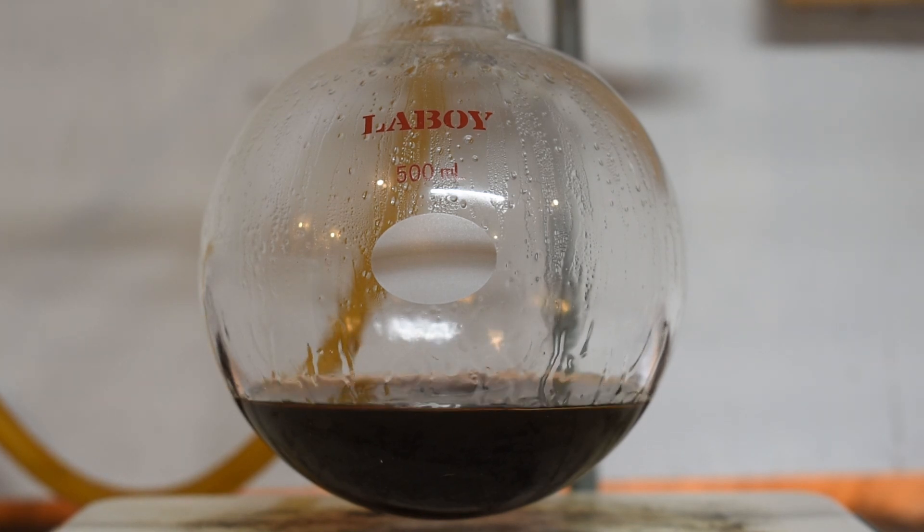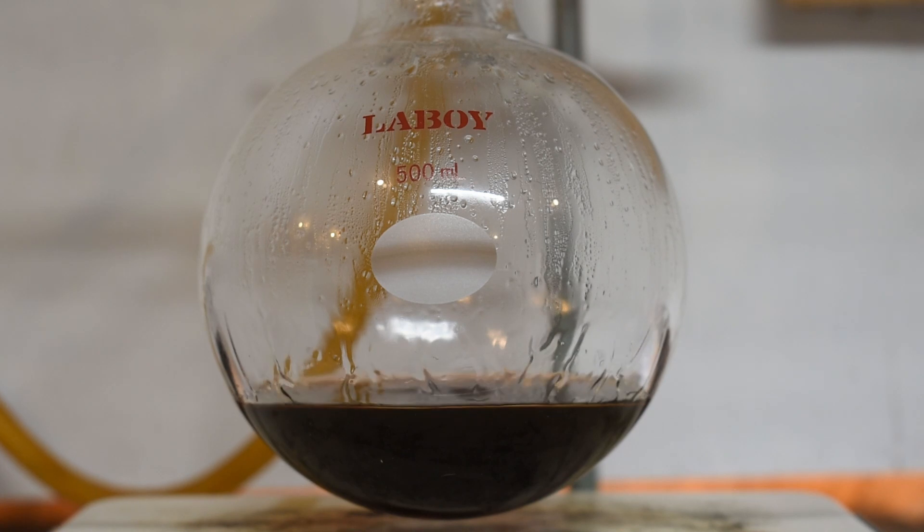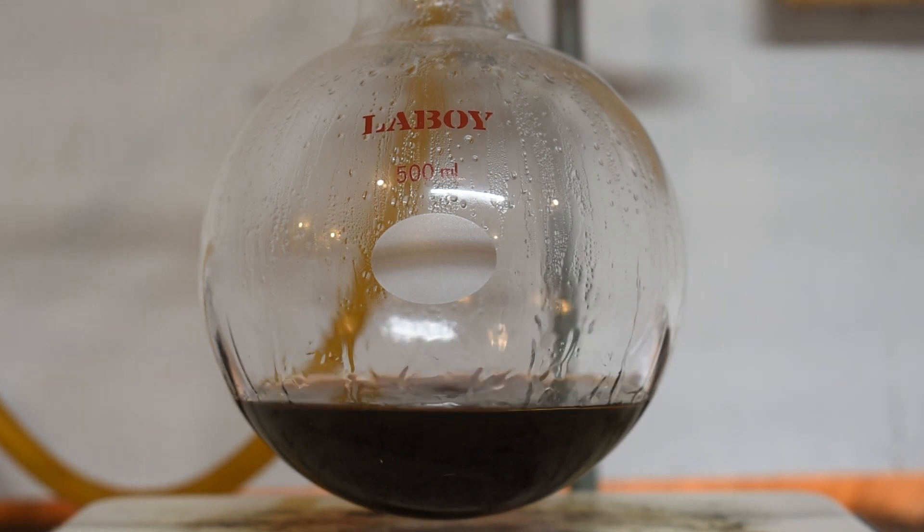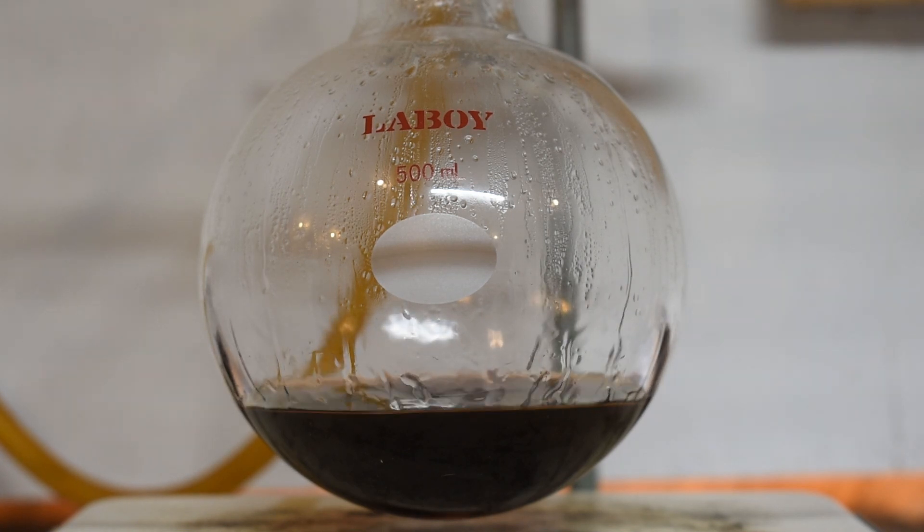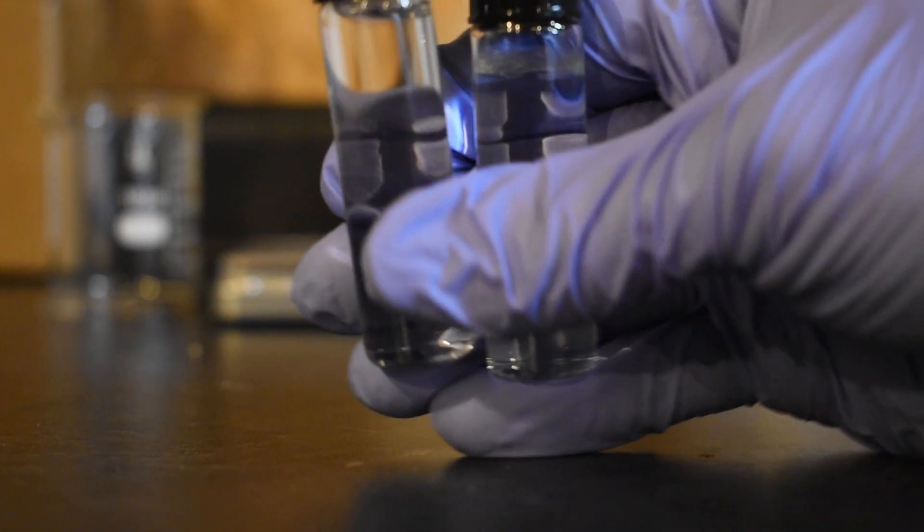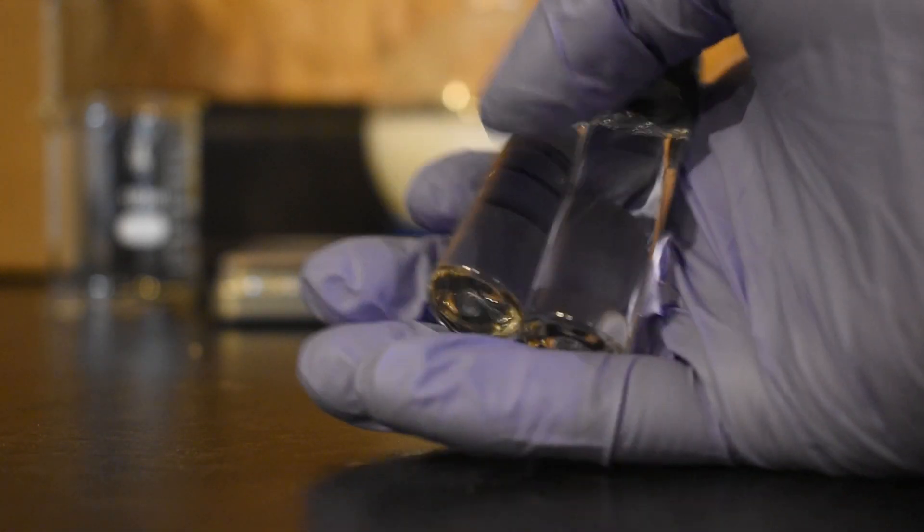In today's video, I'm going to be making isoamyl acetate. This compound is what gives bananas their flavor, and it's also found as artificial banana flavoring in candy. It's also a bee pheromone that's used to signal other bees to start attacking.